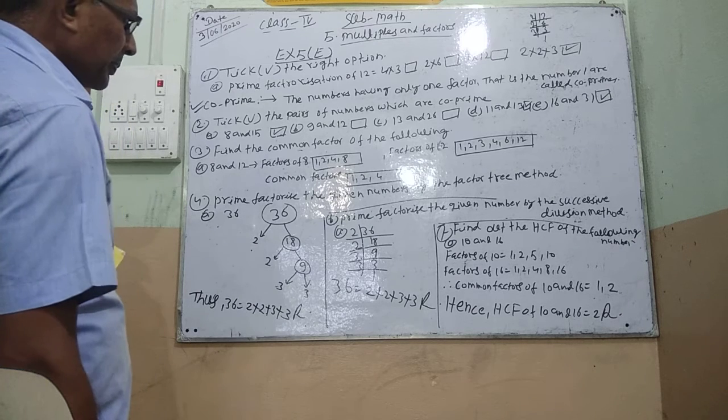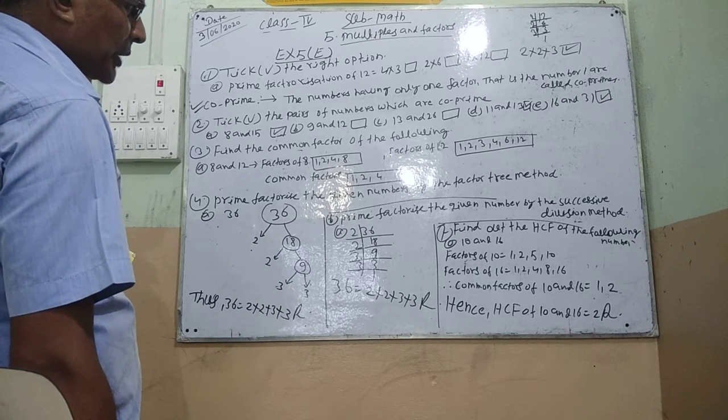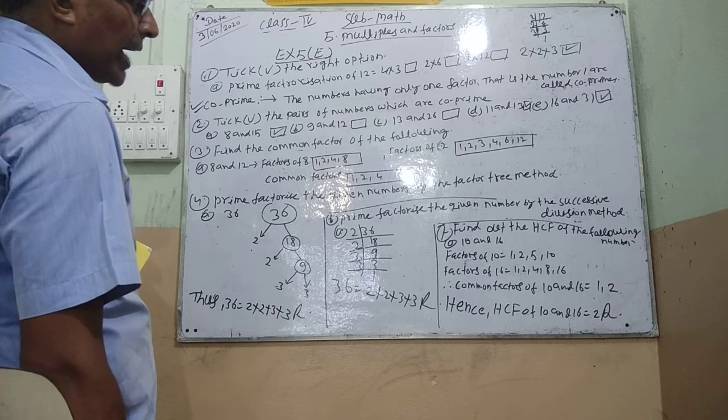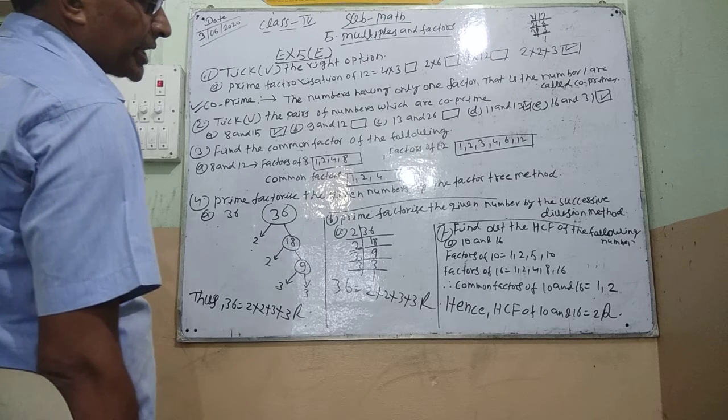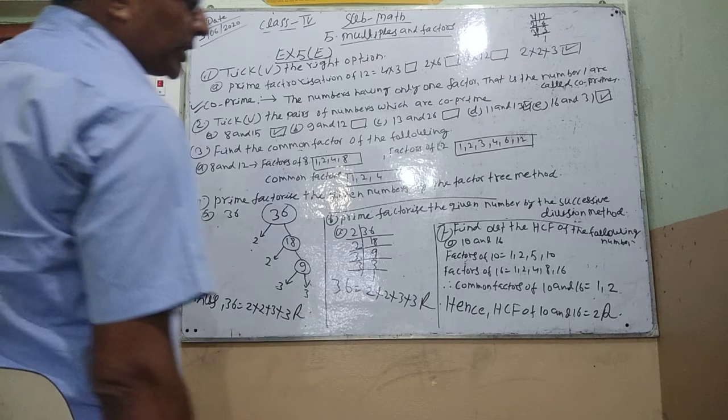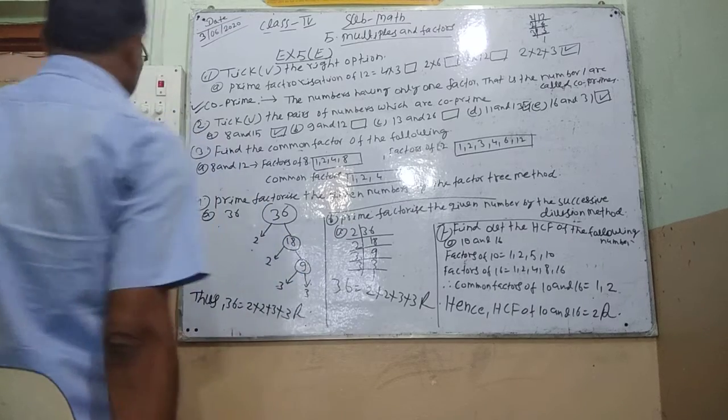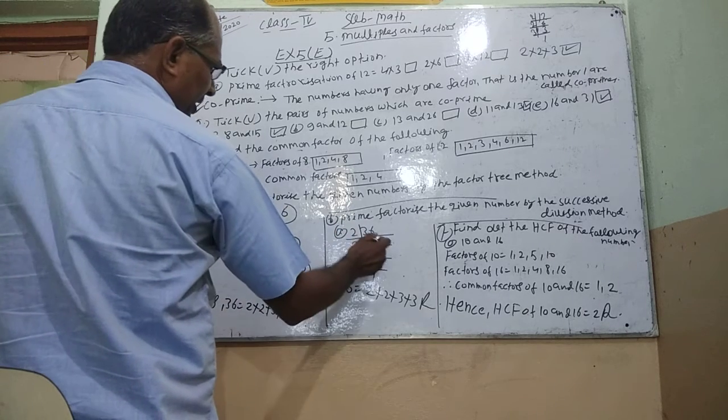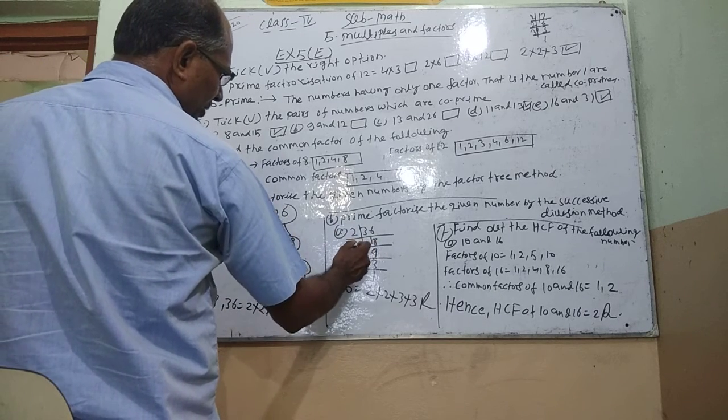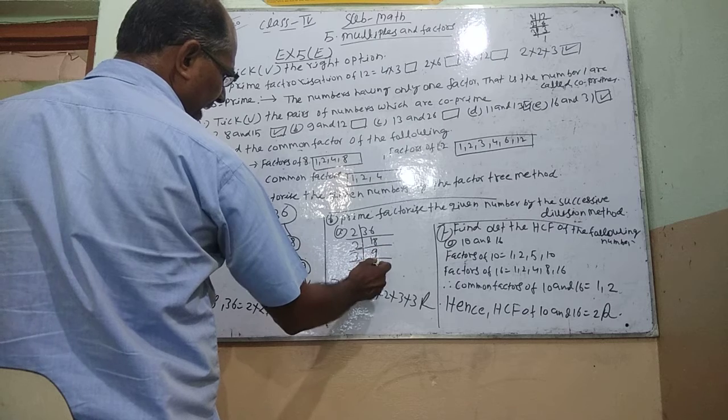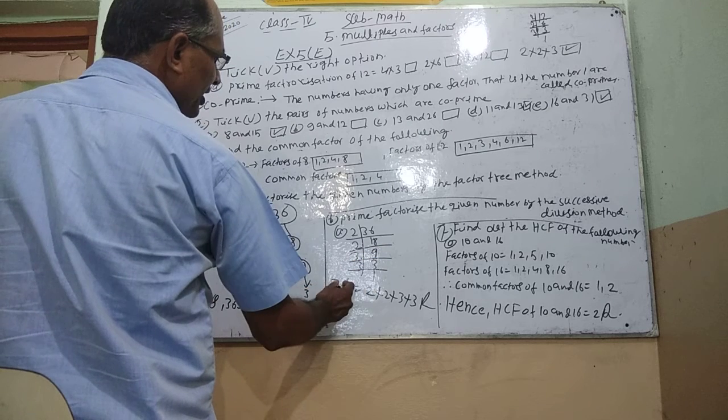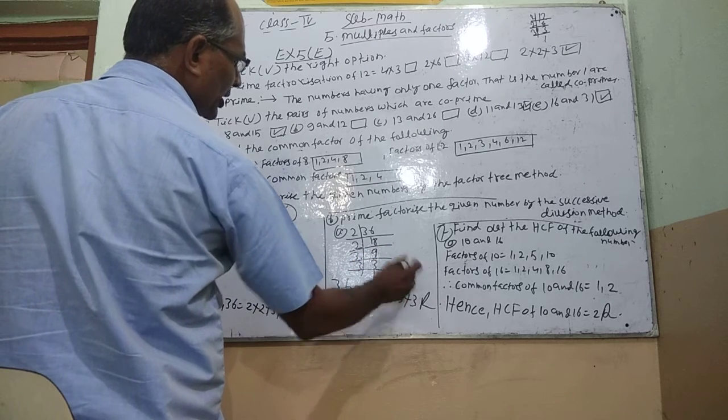Prime factorization of the given number by the successive division method. We have 36. 2 into 18, 2 into 9, 3 into 3. So 36 equals 2 into 2 into 3 into 3.